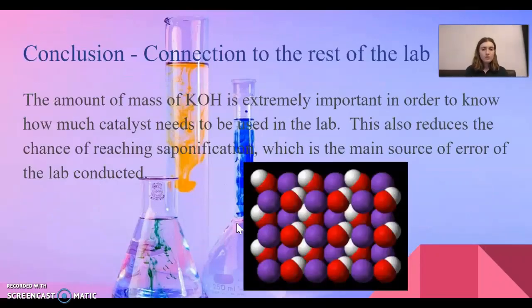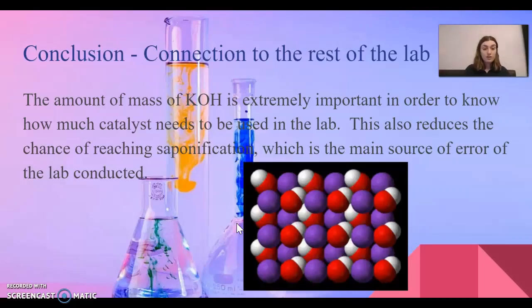Let's look at how this connects to the rest of the lab. As mentioned, the KOH mass is extremely important in order to know how much catalyst we're going to need. It also reduces the chances of creating a saponification reaction, which is the main source of error in these types of labs. You can now go look at Meili's second part on transesterification — I wish you a great day!